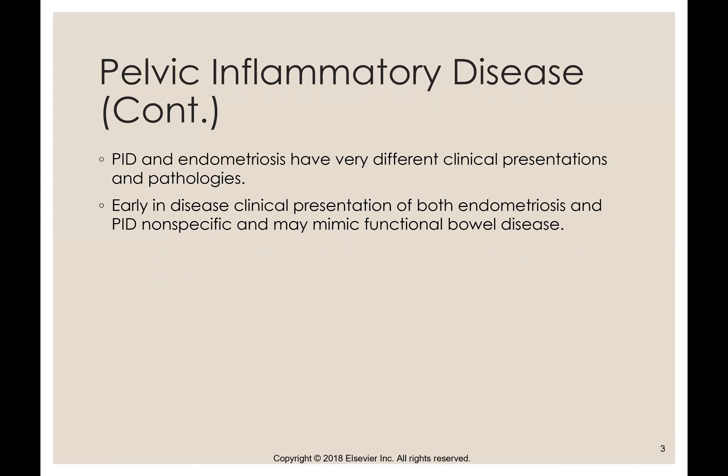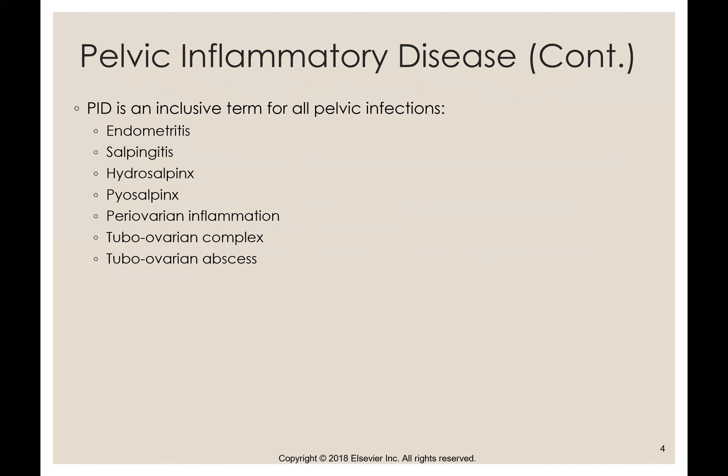PID and endometriosis have very different clinical presentations and pathologies, but early in the disease they can both kind of mimic each other. Pelvic inflammatory disease is an inclusive term for all these different pelvic infections: endometritis is stage one — inflammation of the endometrium — then salpinitis, hydrosalpinx, pyosalpinx, para-ovarian inflammation, tubo-ovarian complex, and tubo-ovarian abscess.